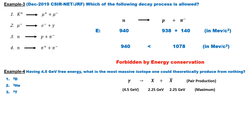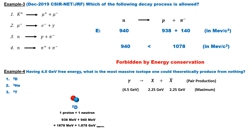A deuteron consists of a proton and a neutron. The proton mass is 938 MeV and the neutron mass is 940 MeV, giving a deuteron mass of approximately 1878 MeV or 1.878 GeV. Since both the deuteron and its antiparticle have mass 1.878 GeV, which is less than 2.25 GeV, deuteron can be produced from 4.5 GeV energy according to energy conservation.